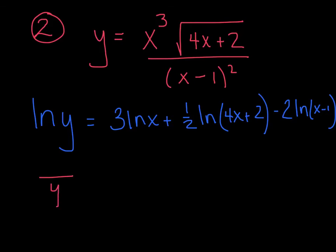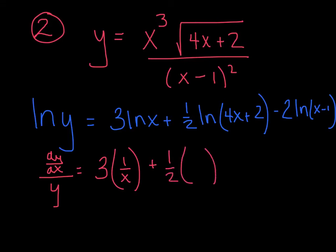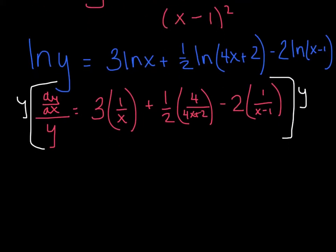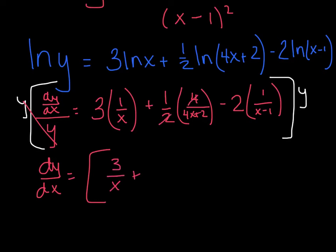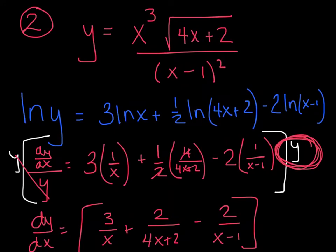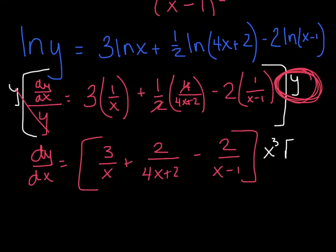I see an ln, so I'm saying du over u: my u is y, so I get dy/dx over y equals: 3 is the coefficient, the derivative of the ln of x is 1 over x, plus 1/2 is the coefficient, the derivative of the ln of 4x plus 2 - my u is 4x plus 2, my du is 4 - minus 2, du over u, my u is x minus 1, its derivative is 1. To kill this fraction, I'm going to multiply and balance both sides by y. So dy/dx equals - cleaning it up - 3 over x, plus 2 over 4x plus 2, minus 2 over x minus 1, all of that times y. I'm not going to leave a y in there; I'll substitute the original: x cubed times the radical of 4x plus 2. And that, ladies and gentlemen, is my final answer. Not pretty, but taking the log of both sides is very useful.